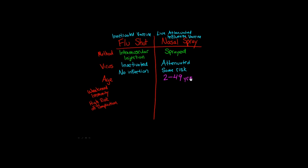However, there's no risk of infection with the flu shot because it uses a killed or inactivated virus. So we can give the flu shot to anyone who is over the age of 6 months.